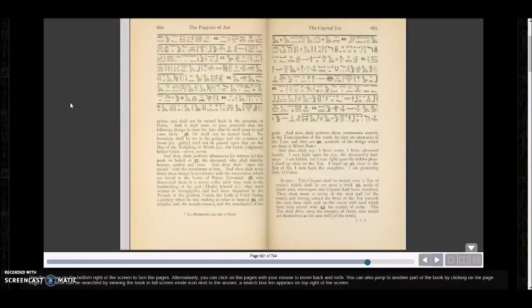And thou shalt say, I have come, I have advanced hastily, I cast light upon his life, footsteps, I am hidden, but I cast light upon his hidden place, I stand up close to the Tet, I stand up close by the Tet of Ka, of Ra, I turn back the slaughter, I am protecting them, Osiris.